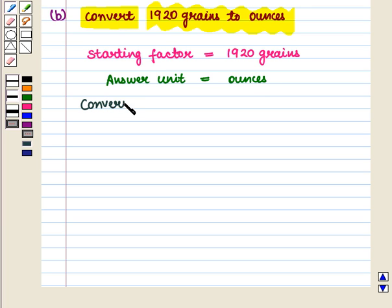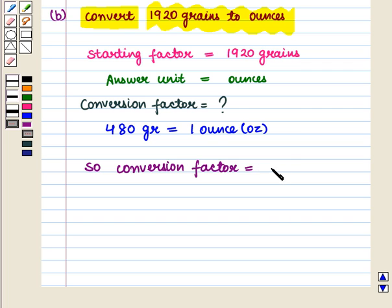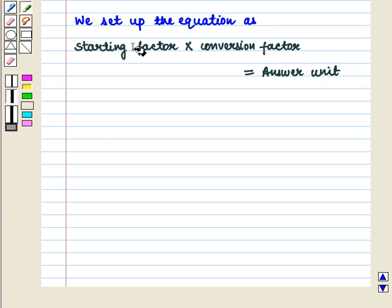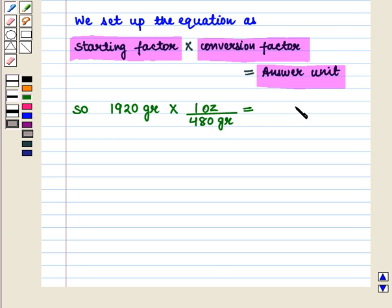We find the conversion factor. We know that 480 grains is equal to 1 ounce, so the conversion factor will be 1 ounce upon 480 grains. We set up the equation as: starting factor of 1920 grains multiplied by the conversion factor of 1 ounce upon 480 grains equals the answer unit in ounces.